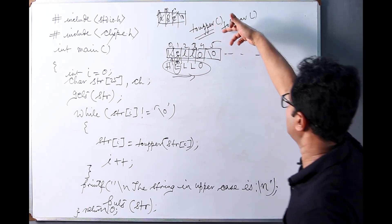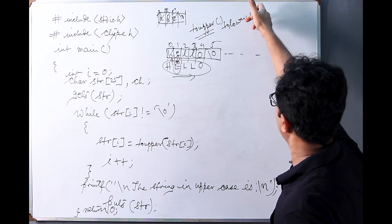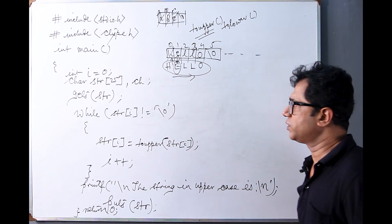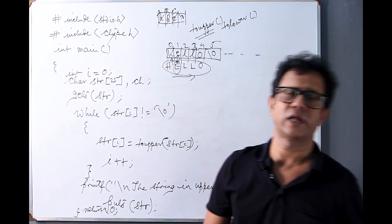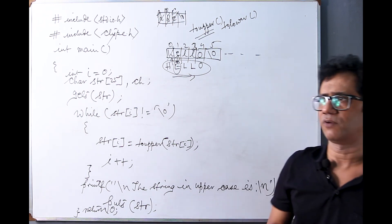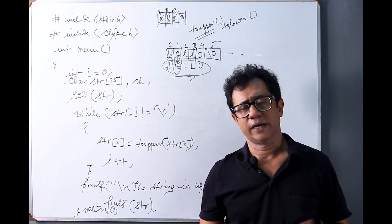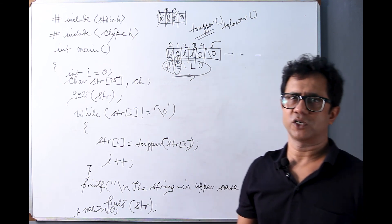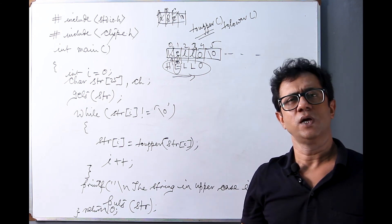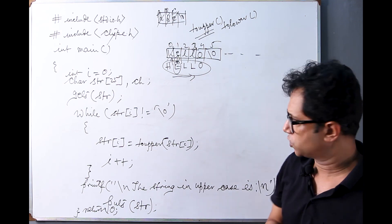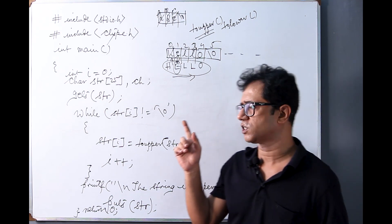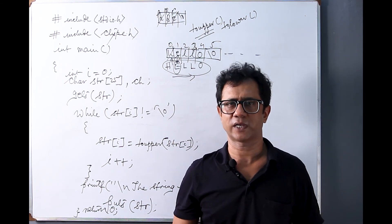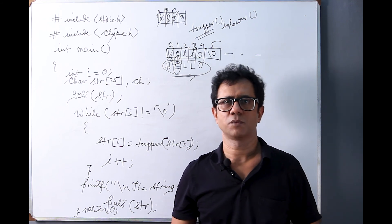In this video we explained toupper(); tolower() is quite similar to that. In upcoming videos I will describe other character handling functions such as isalpha(), islower(), isdigit(), isupper() — there are many character handling functions in ctype.h which we will show one by one. If you have any doubts regarding this program, post your queries in the comment section so I can address them. Thanks for watching.